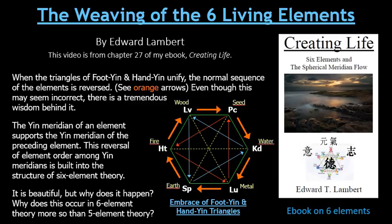When the triangles of foot yin and hand yin unify, the normal sequence of the elements is reversed. The arrows go from earth to fire to wood to seed to water to metal — that's the reverse of the normal flow of wood to fire to earth to metal to water to seed. Even though this may seem incorrect, there is a tremendous wisdom behind it — a reason, a logic, an understanding that I'm going to be developing in this video.